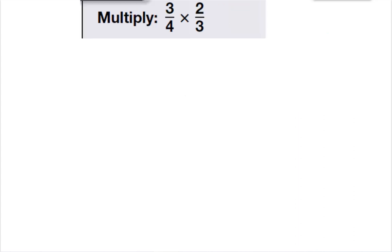Here I have three-fourths times two-thirds. Remember, we multiply straight across. Three times two is six, and four times three is twelve.